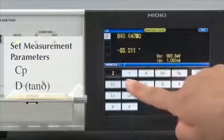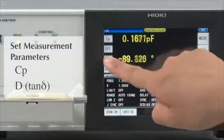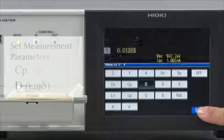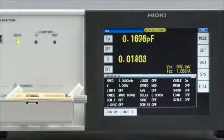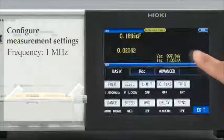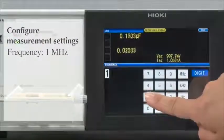First, select C, P, and D. Now, configure the measurement conditions. Set the measurement frequency at 1 MHz.